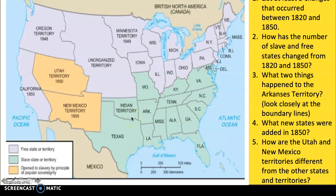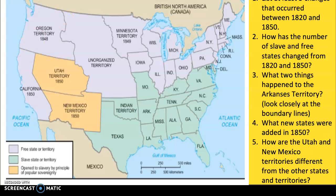Take a moment and look at your last map — the Compromise of 1850. Answer the five questions that go with this map. List at least five changes that occurred between 1820 and 1850. How has the number of slave and free states changed from 1820 to 1850? What two things happened to the Arkansas Territory? Look closely at the boundary lines. What new states were added in 1850? And number five: how are the Utah and New Mexico Territories different from the other states and territories? Take a few moments to answer those five questions.